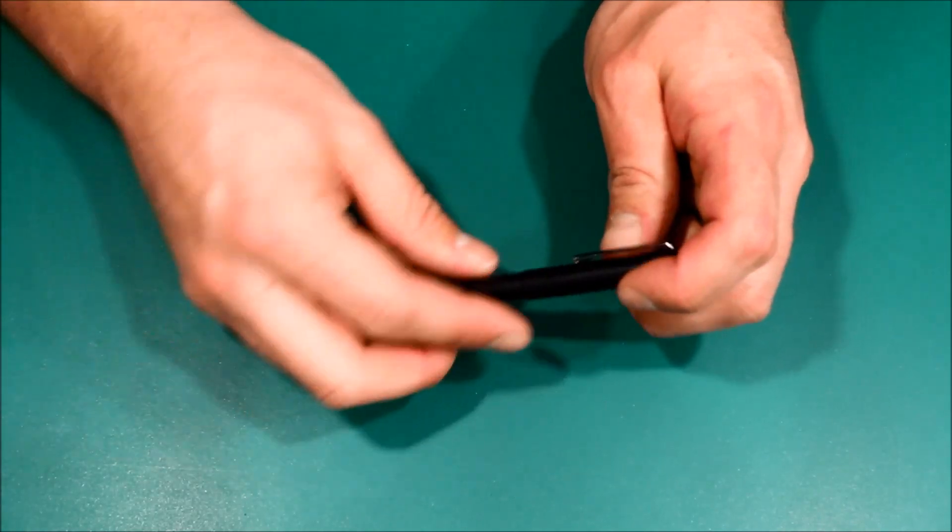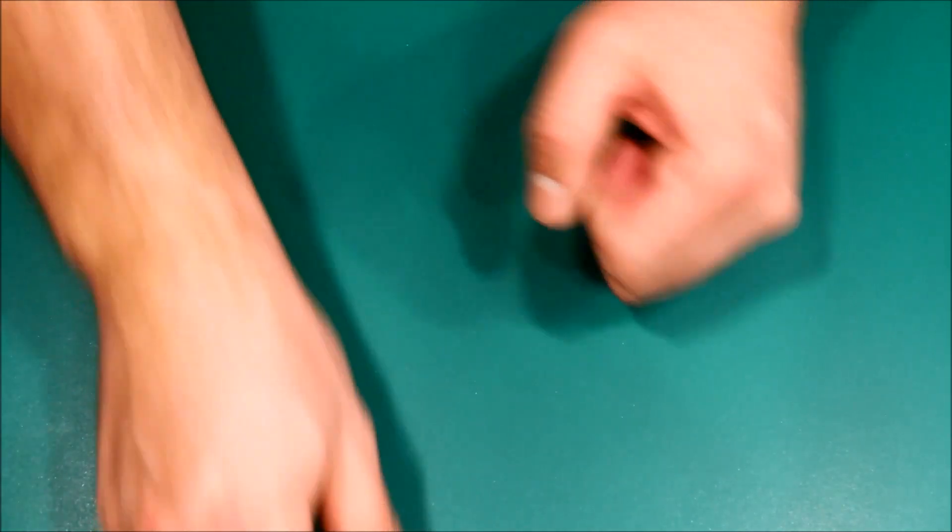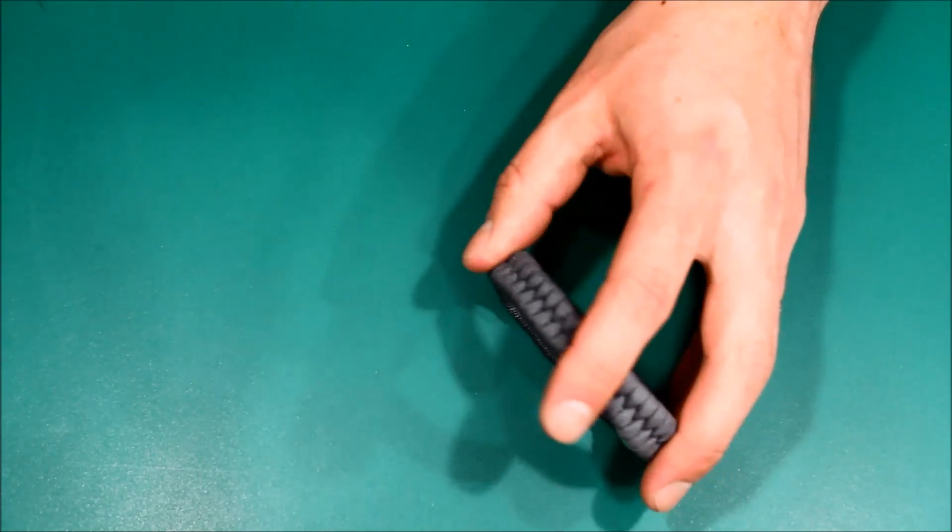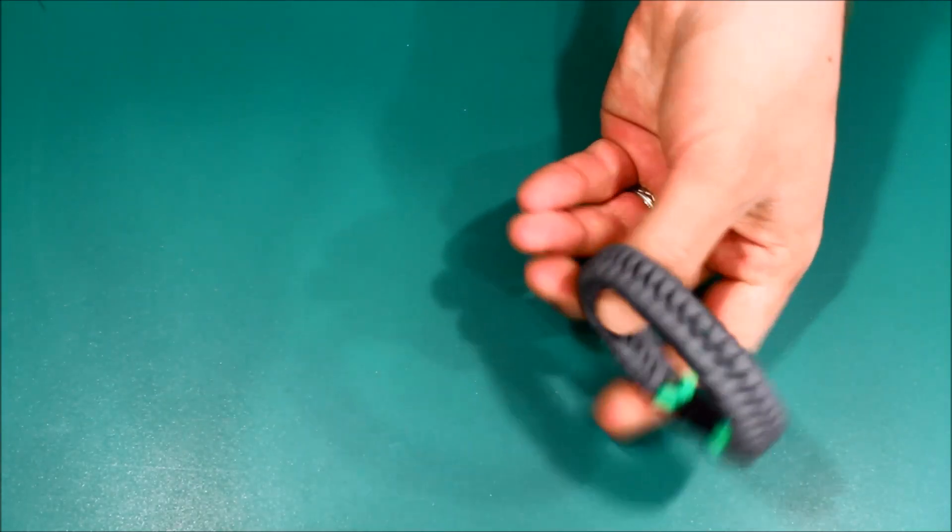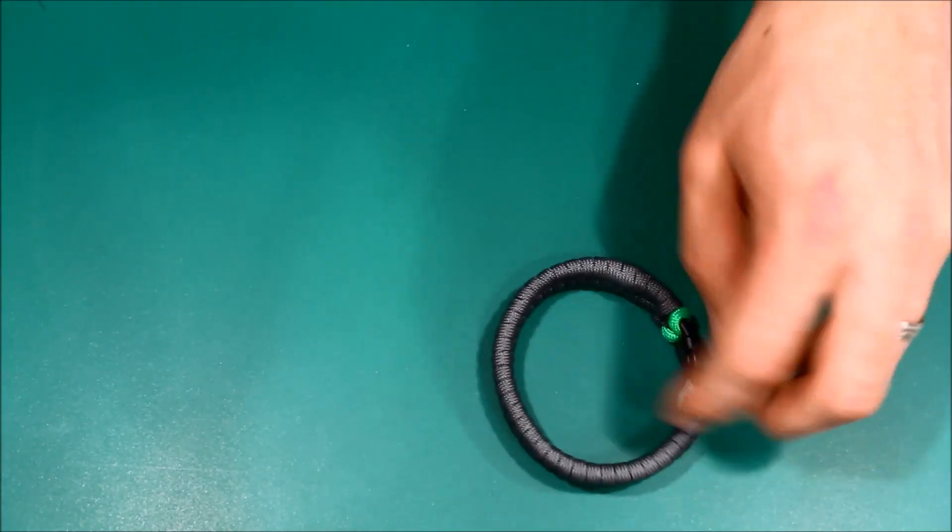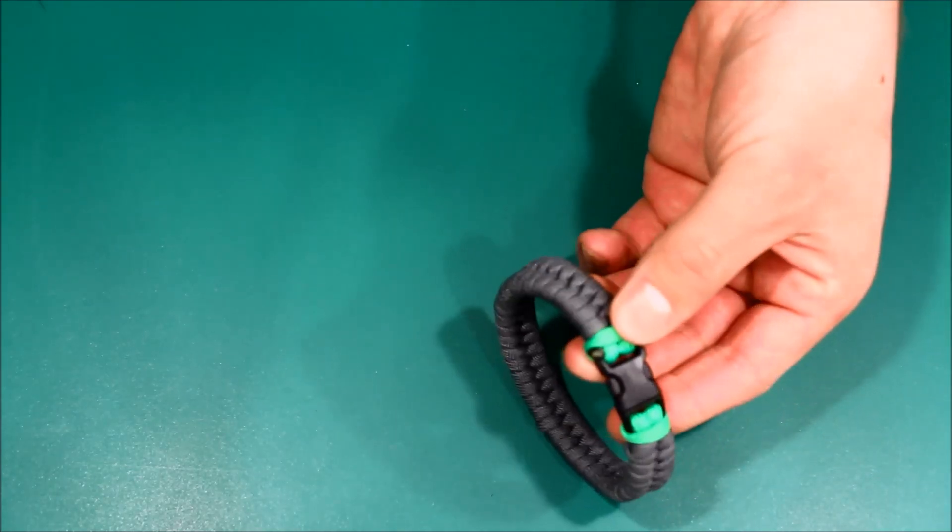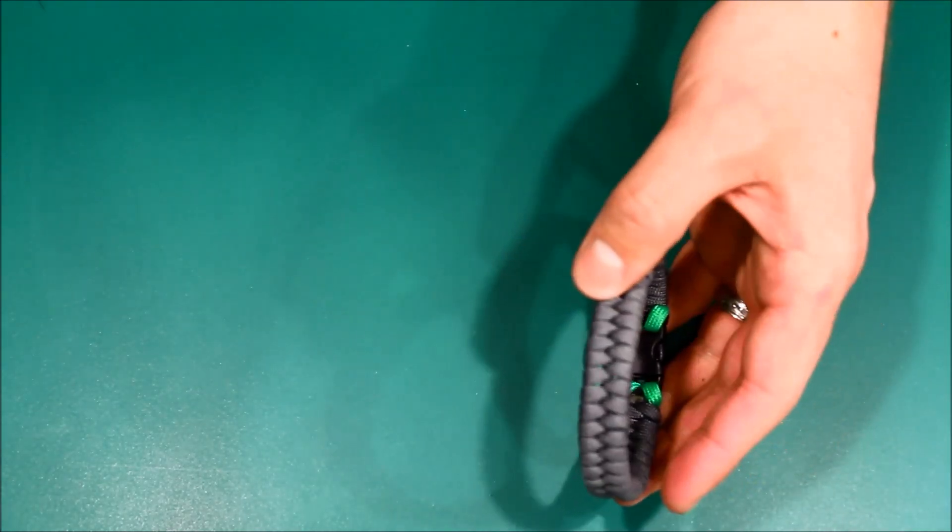I usually have a paracord bracelet on - not always, but I wear them because I like the looks of them. This one I just made out of gray and caustic green paracord. I usually have one of those on, whatever color I feel like wearing.